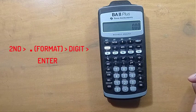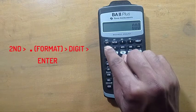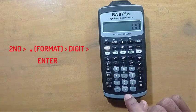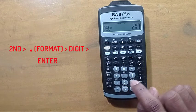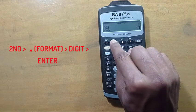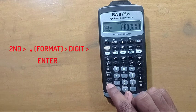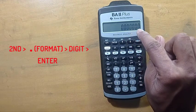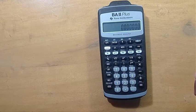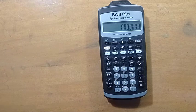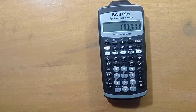If you want to change it to 6, then press the second yellow key, then format, and now 6 and enter. You have six digits after the decimal point. I think this video will help you, and thank you for watching.